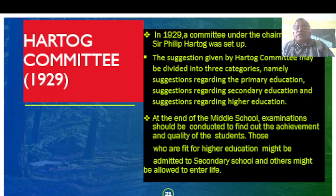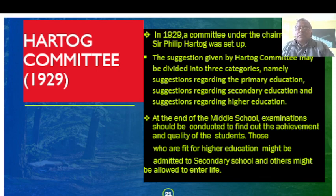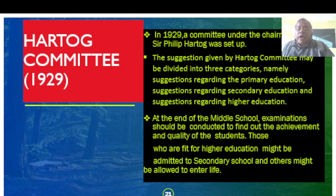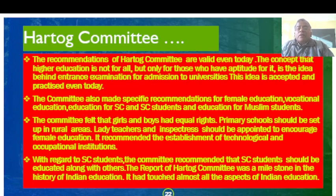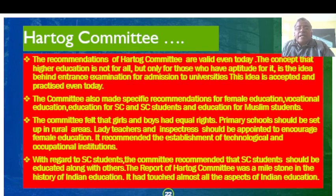Next, the Hartog Committee of 1929. The committee under the chairmanship of Sir Philip Hartog was set up. Its suggestions may be divided into three categories: suggestions regarding primary education, suggestions regarding secondary education, and suggestions regarding higher education. At the end of middle school, an examination should be conducted to find the achievement and quality of students. Those fit for higher education might be admitted to secondary school, and others might be directed to various occupations. The concept that higher education is not for all but only for those who have aptitude for it is the idea behind entrance examinations for university admission.